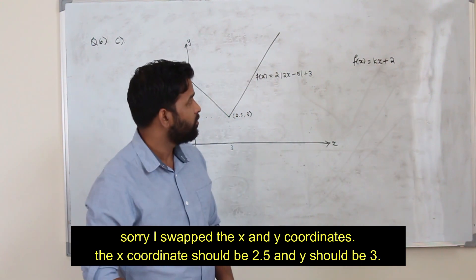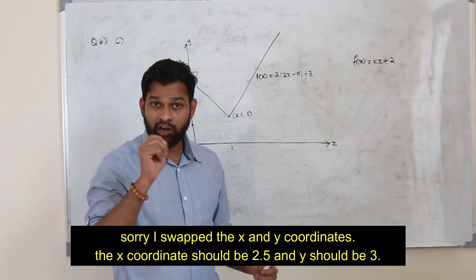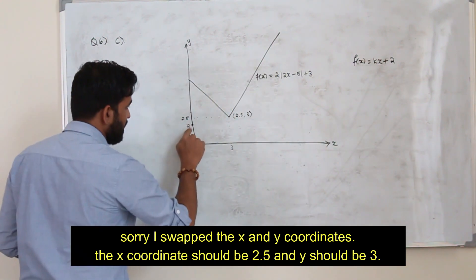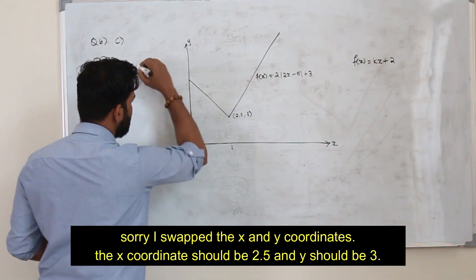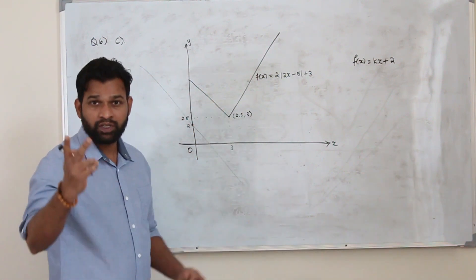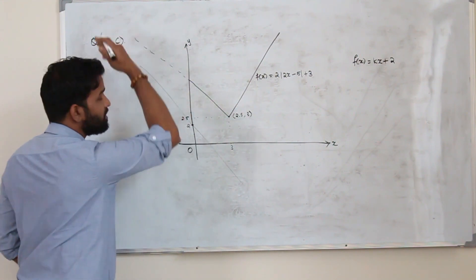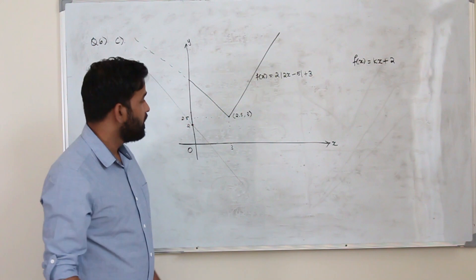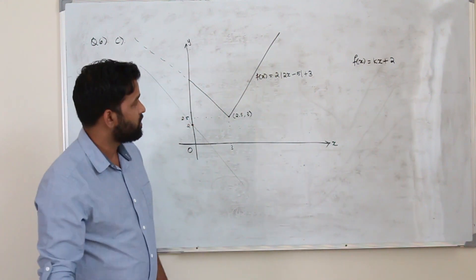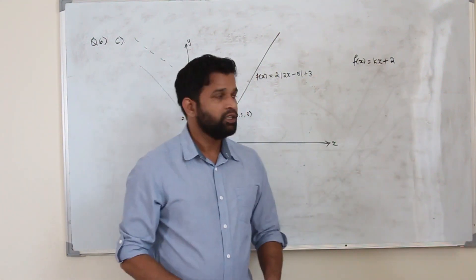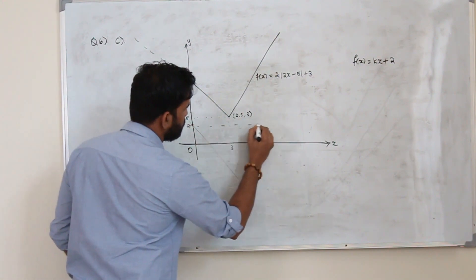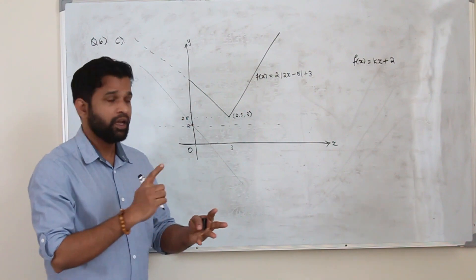k is just a constant — it is not given whether it is positive or negative, so we are going to analyze both cases. If k is negative, the y-intercept is 2, so if you draw a line with negative slope it won't intersect the modulus function at two points; at most you will get only one point of intersection. So k will never be a negative value. If k is 0, the straight line is y = 2, meaning no point of intersection at all. So k cannot be negative, and k cannot be 0.